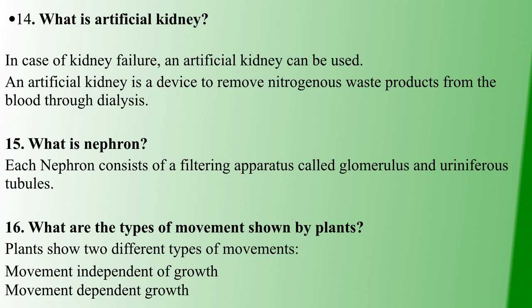Next question: what is an artificial kidney? An artificial kidney is a device used in cases of kidney failure. It removes nitrogenous waste products from the blood. In a normal kidney, the glomerulus and uriniferous tubules within the nephron are important parts that perform this filtration function.